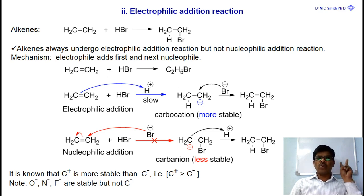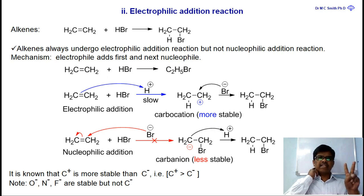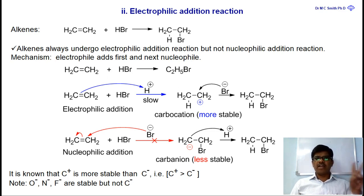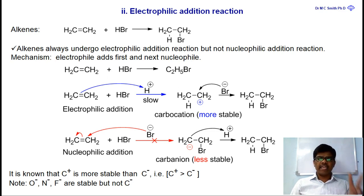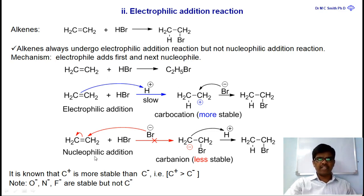Overall, in addition reactions, two ions or two free radicals are added to the double bond or reactant. If the first added species is an electrophile, then the reaction is known as electrophilic addition. Alkenes always undergo electrophilic addition reactions.